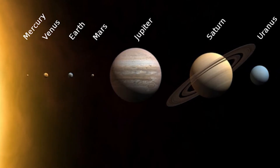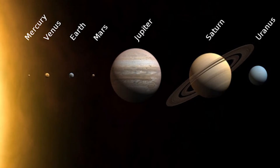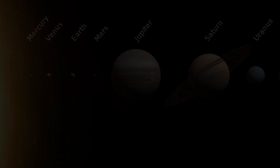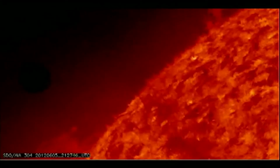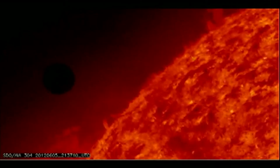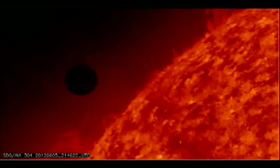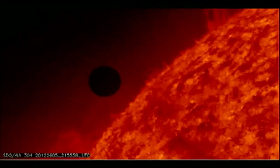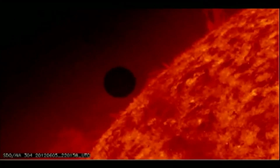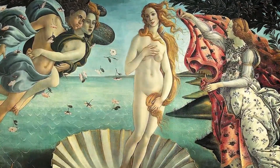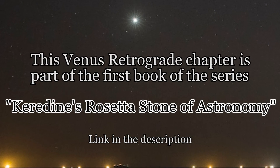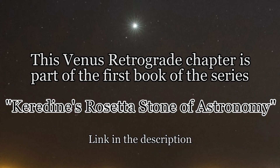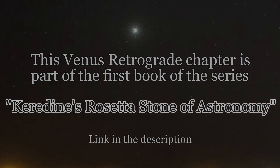Venus is the second planet from the sun, orbiting it every 224.7 Earth days. It has the longest rotation period of 243 days of any planet in the solar system and rotates in the opposite direction to most other planets, meaning the sun rises in the west and sets in the east as seen from Venus. It does not have any natural satellites. It is named after the Roman goddess of love and beauty and is the second brightest natural object in the night sky after the moon, reaching an apparent magnitude of 4.6 — bright enough to cast shadows at night and rarely visible to the naked eye in broad daylight.